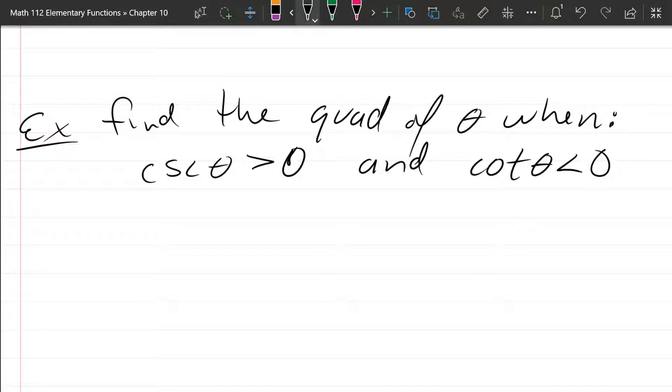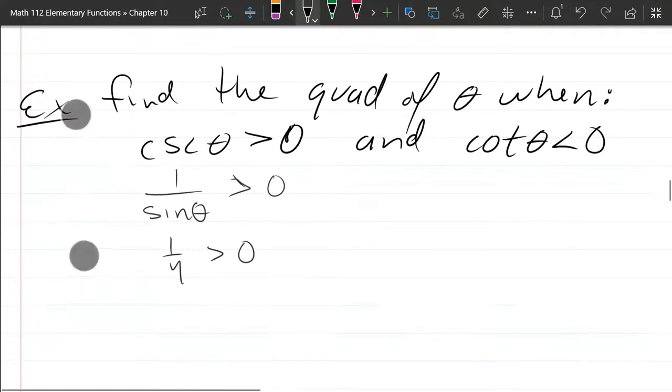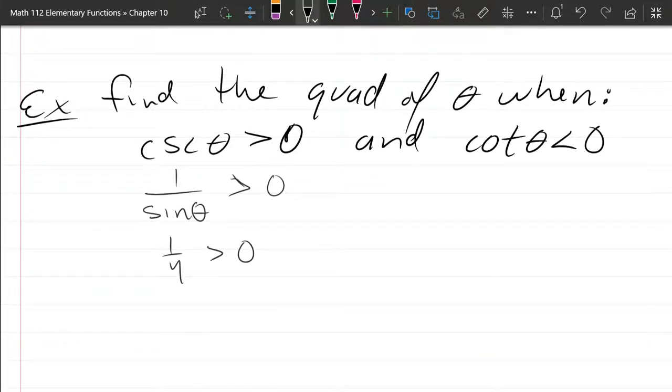So cosecant, that's 1 over sine, is positive, and of course sine is the y value. Now, if the reciprocal 1 over y is positive, that's the same as saying that y is positive.